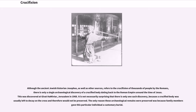Although the ancient Jewish historian Josephus, as well as other sources, refers to the crucifixion of thousands of people by the Romans, there is only a single archaeological discovery of a crucified body dating back to the Roman Empire around the time of Jesus, discovered at Givat HaMivtar, Jerusalem in 1968. A crucified body was usually left to decay on the cross and therefore would not be preserved. The only reason these remains were preserved was because family members gave this particular individual a customary burial.